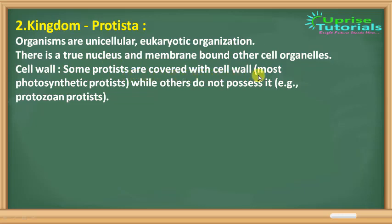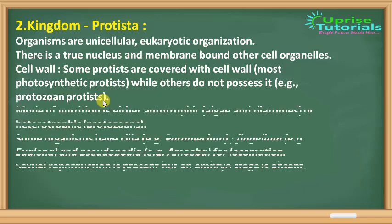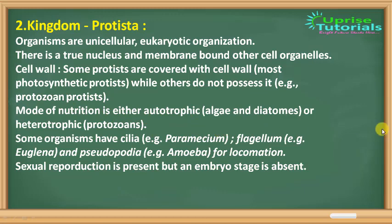Some protists are covered with cell walls. Mode of nutrition is mostly autotrophic — they are photosynthetic and make their own food — while others like protozoans are heterotrophic and cannot make their own food. They are more developed because they have a true nucleus and membrane-bound organelles. Autotrophic examples include algae and diatoms. Heterotrophic examples include protozoans such as Euglena, Amoeba, and Paramecium.